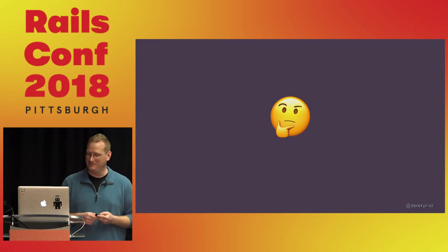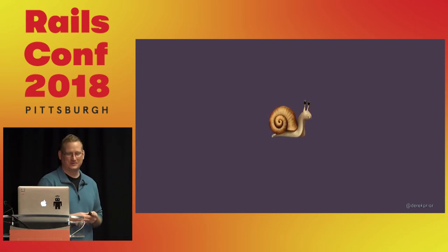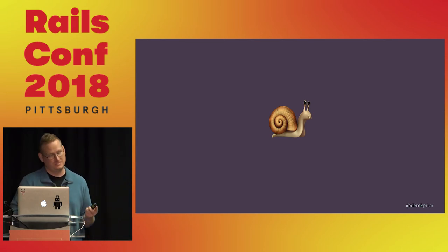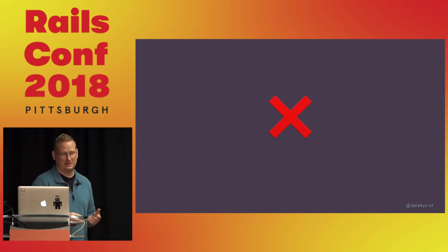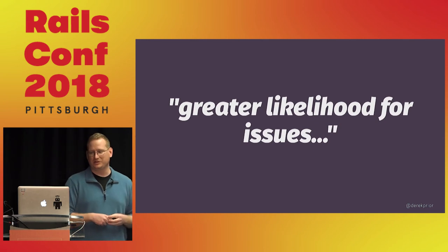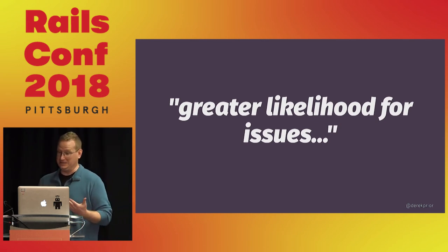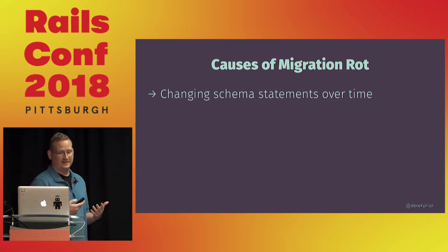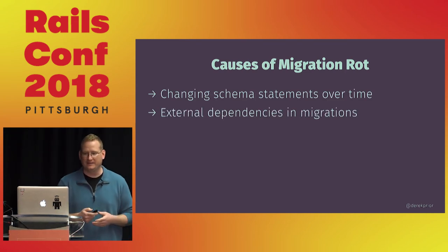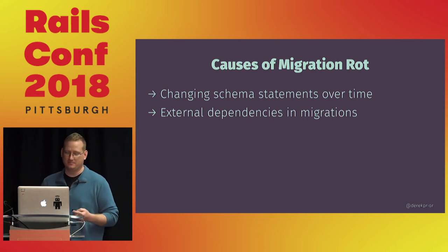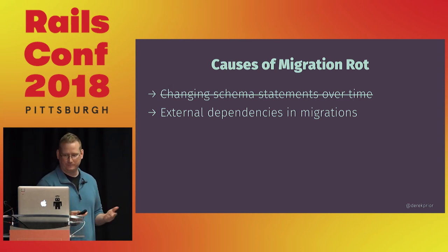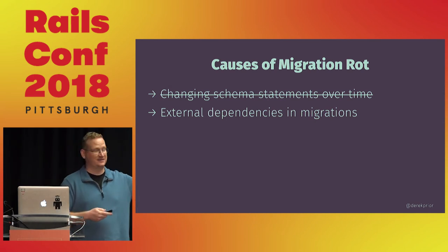So let's examine those claims. The first is that it's going to be too slow — I've never actually seen schema migrations on an empty database be slow. Maybe someone at GitHub with years of hundreds of developers' migrations can tell me it's a problem, but for most of us it's really not an issue, so I'm going to throw that out. What about greater likelihood for issues — what I refer to as migration rot? Migration rot has two primary causes historically: the meaning of our schema statements might change over time, and we're using external dependencies in our migrations. That first one is largely lessened or maybe even eliminated by the compatibility layer.